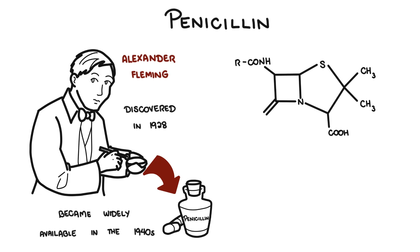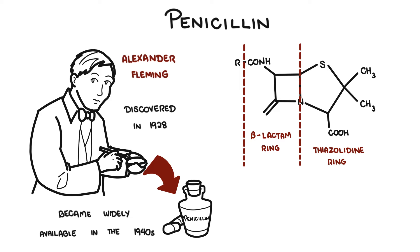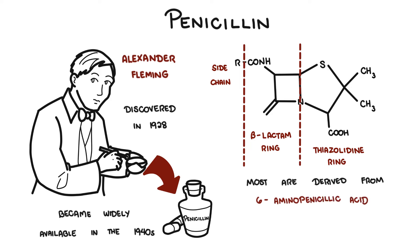The penicillins are closely related compounds comprising a beta-lactam ring, a five-membered thiazolidine ring, and a side chain. The ring structures are essential for antibacterial activity and the side chain determines the spectrum and pharmacological properties. Most penicillins in current use are semi-synthetic derivatives of 6-aminopenicillanic acid.